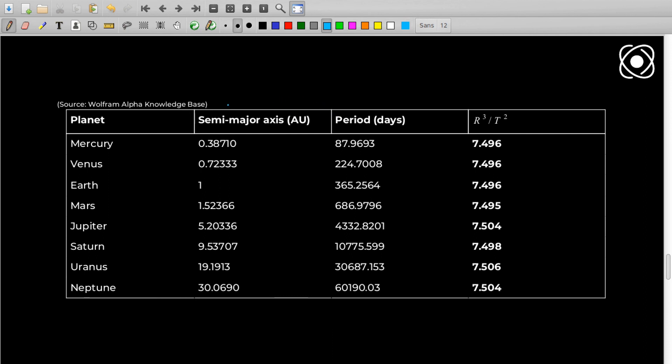This is the data of semi-major axis of the planets in our solar system and their orbital periods. This is collected from Wolfram Alpha's knowledge base. You can see the r cubed by t squared comparison. It's almost constant: 7.496, 7.496, 7.496, 7.504, 7.498, 7.506, 7.504. This is a really, really close rate.